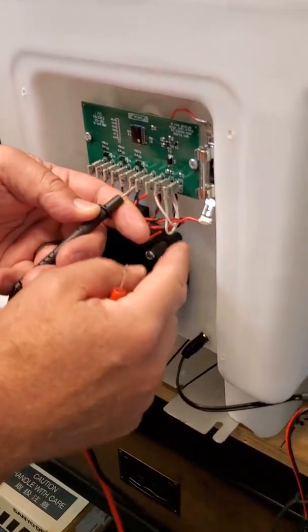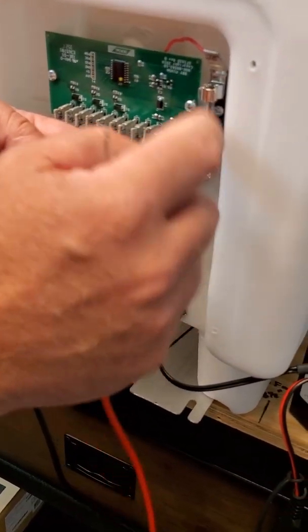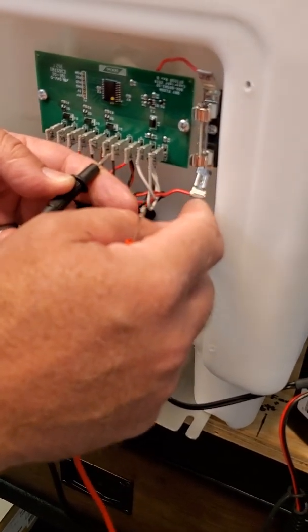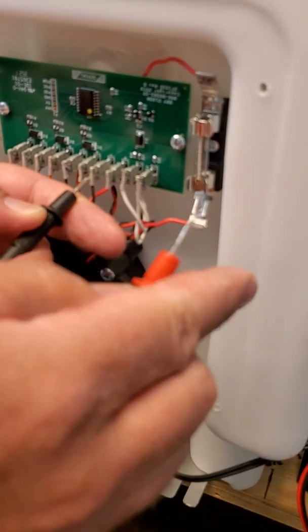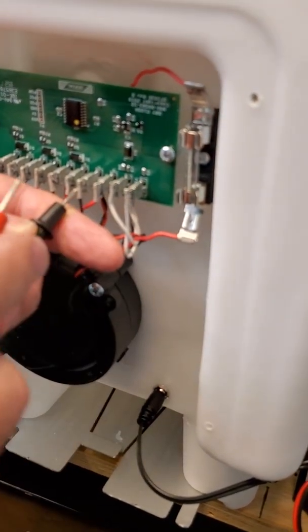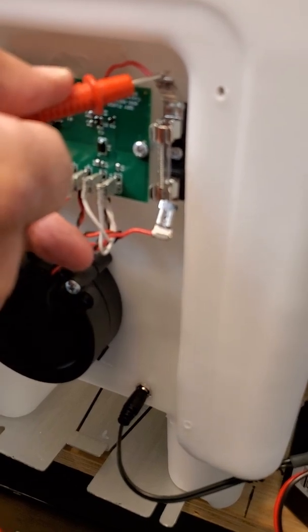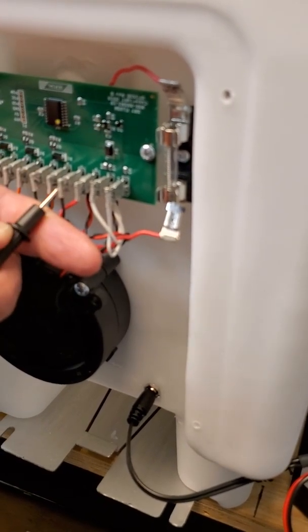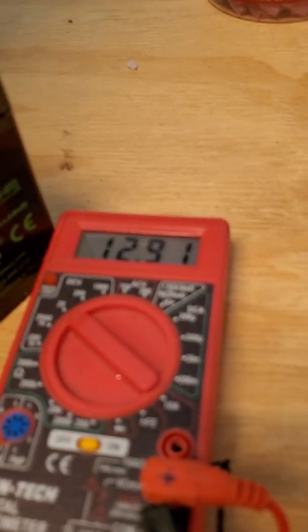The power comes in and it breaks off on either side of this fuse here, so that if there's a surge, the fuse blows and saves the circuit board and the rest of the circuitry. We check up here, holding the negative and then checking up on top. You see we have 12.91 volts.